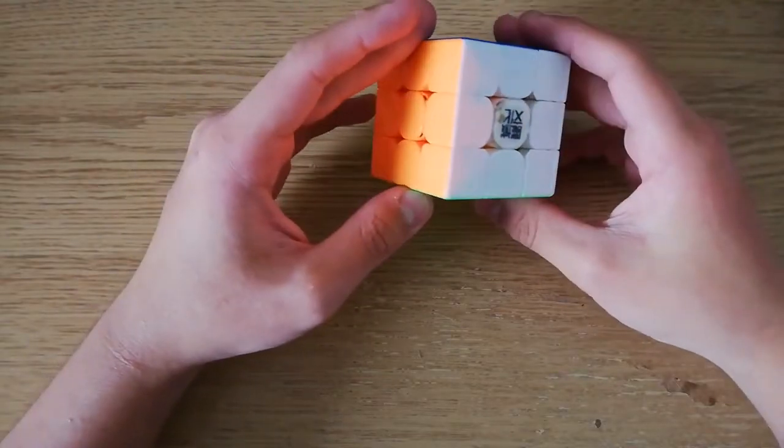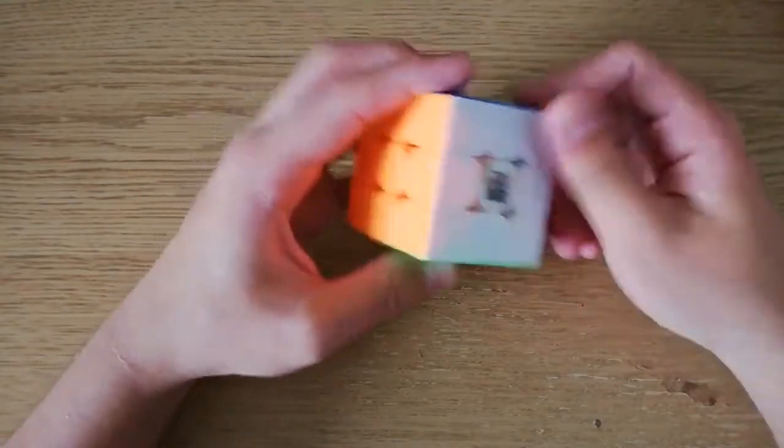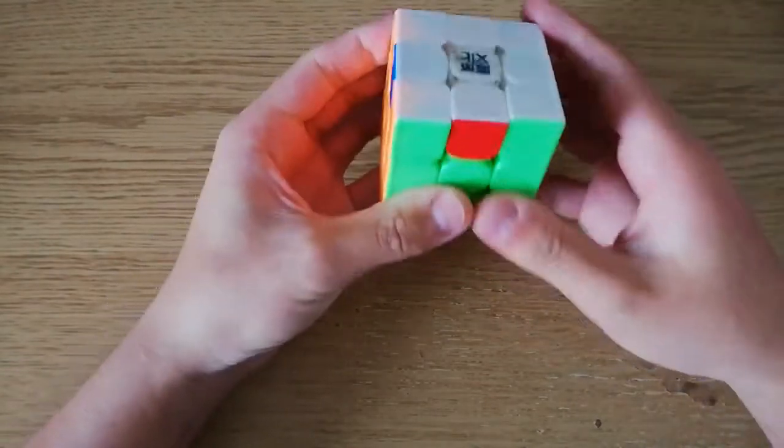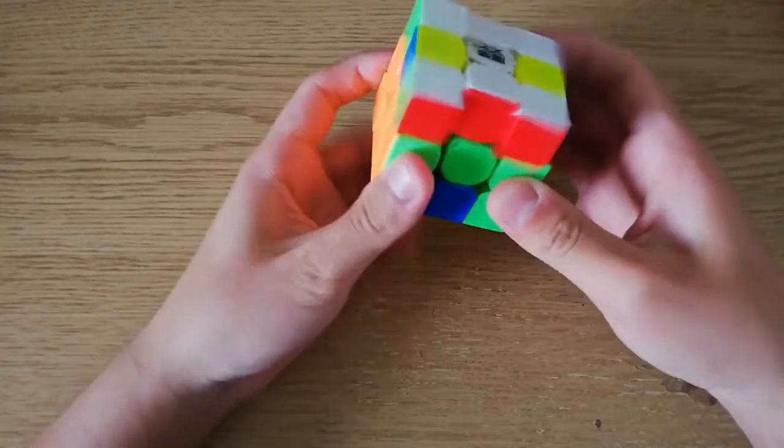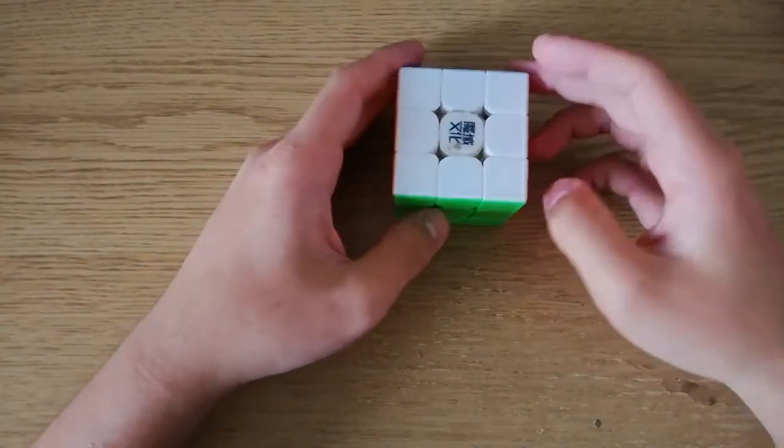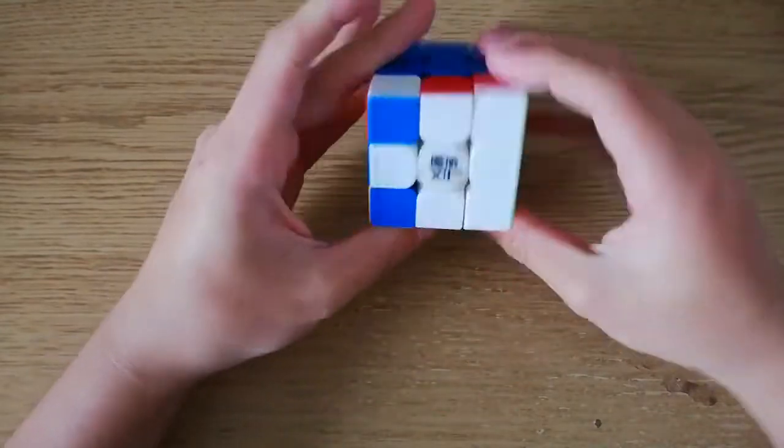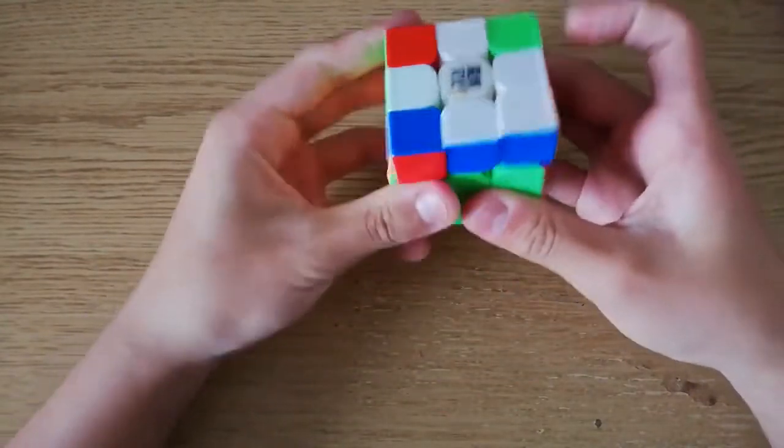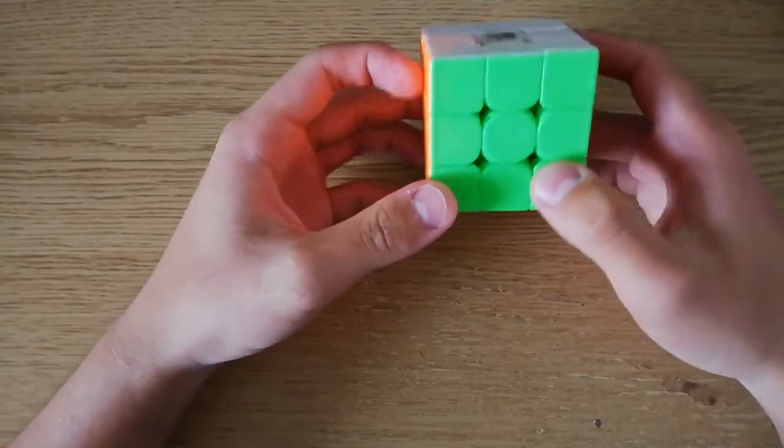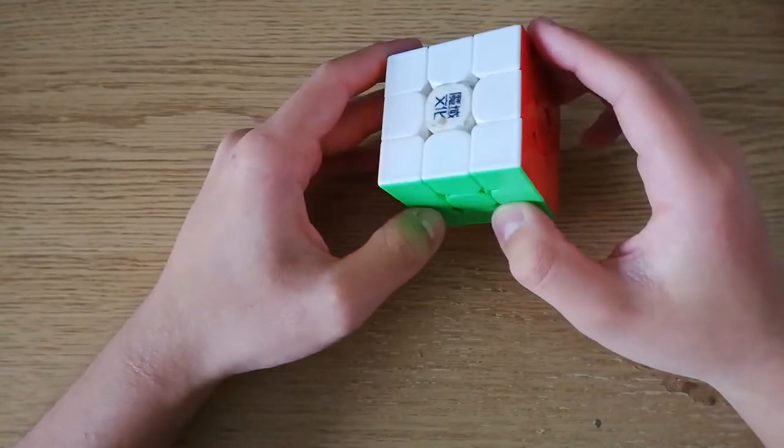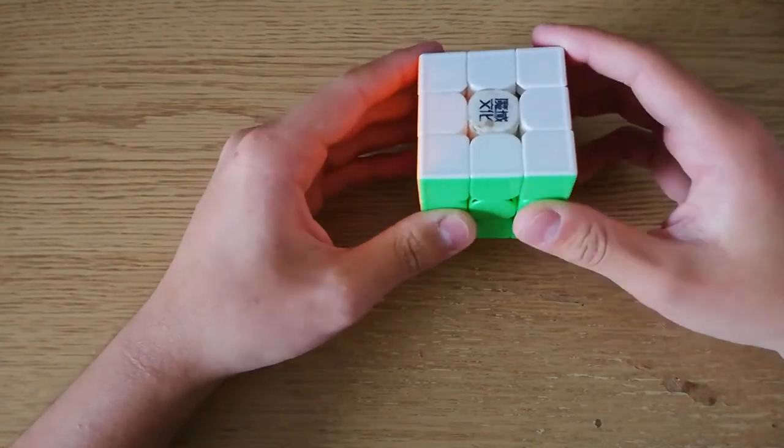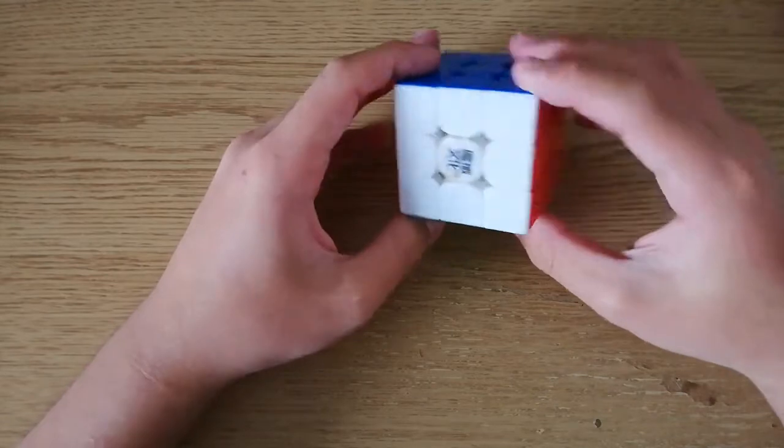So, you've finished learning all of the COL algorithms, and now you can do the basic cases using an algorithm and get an EPLL at the end, an edge permutation. But now you want to learn them in a better way, so you can solve this case in just a single algorithm and have a solved cube. So how do you do that? This is what ZBLL is. It's short for Zeborowski Brutum last layer.